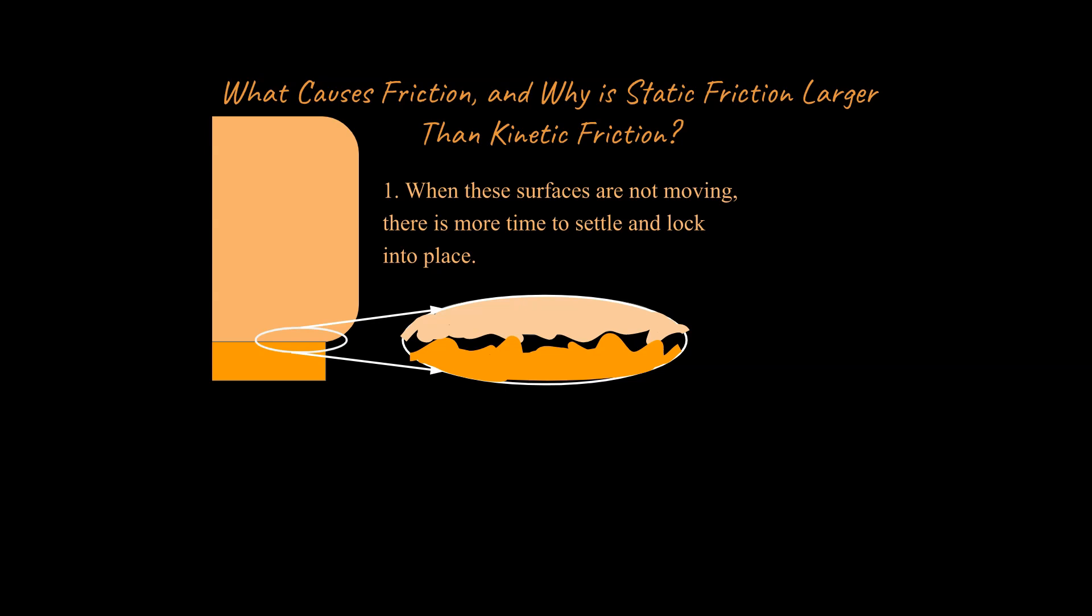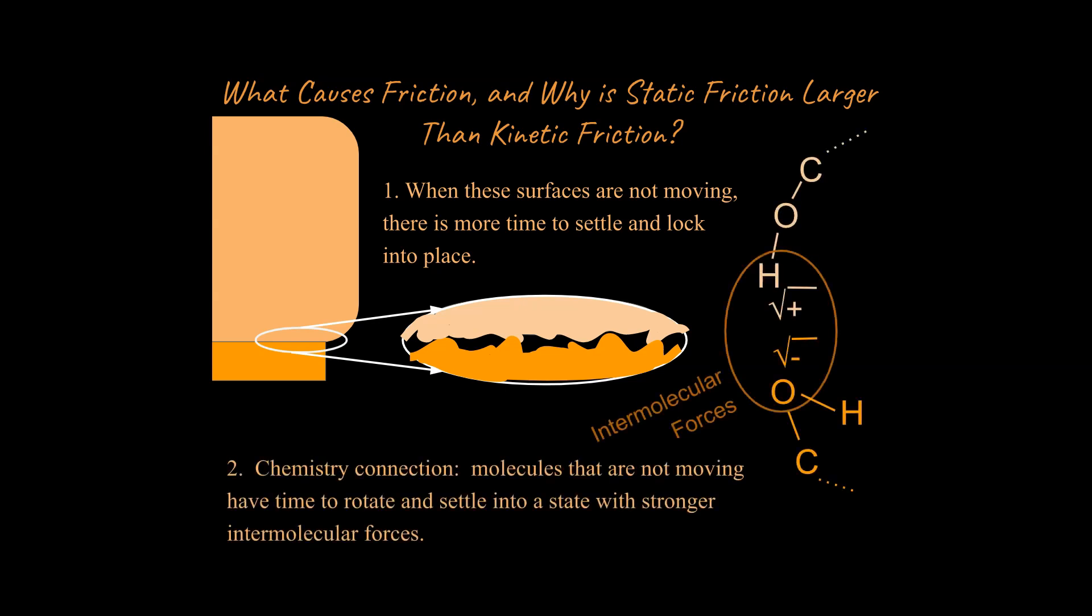The second reason for this is based on chemistry. And so you may have had chemistry, you may not have had chemistry. If you haven't had chemistry, this is probably not going to make much sense to you as I explain this. If you have, please try to think in terms of chemistry for a moment. So if these objects are stationary, what happens is you can get rotation of molecules or atoms.